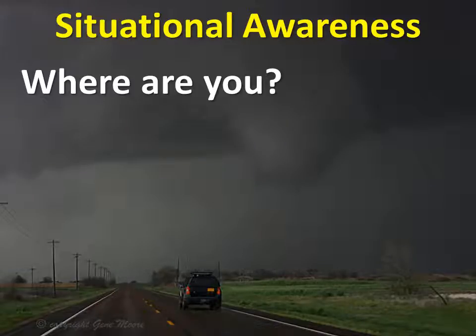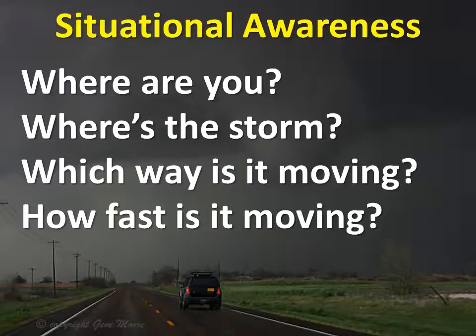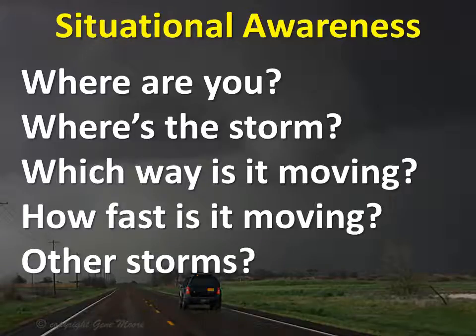Knowing your current location is critical. It may sound silly, but it's possible to lose track of your exact location, even in familiar areas. You have to have the most current data possible to know where the storm is, which way it's moving, and how fast it's moving. It's also critical to know about other storms in the immediate area. It's easy to focus on your storm of interest and get caught by surprise when new storms develop. This is why it's a good idea for mobile spotters to work in teams — it's easy for a spotter working alone to lose sight of the big picture and possibly miss important information.